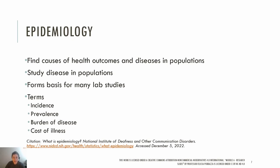Experimental studies like randomized clinical trials differ greatly from observational studies in the way they are conducted and the strength of their conclusions. There are some key terms you will see when looking at research. Incidence is the number of new cases of a disease or disorder in a population over a period of time. Prevalence is the number of existing cases of a disease in a population at a given time.